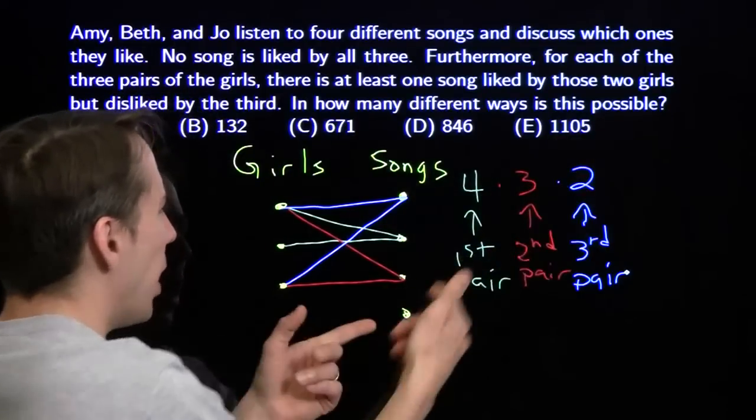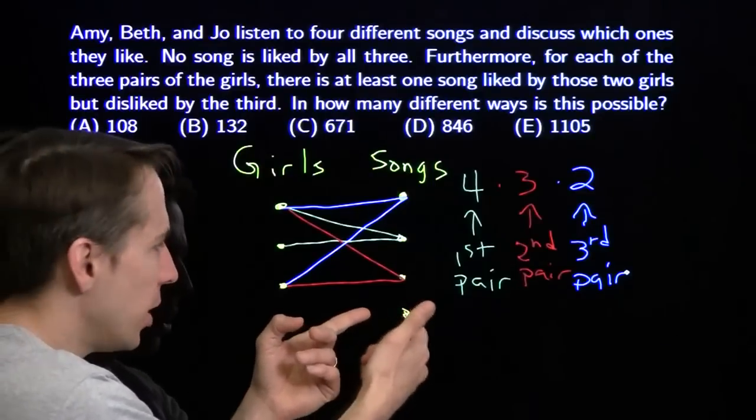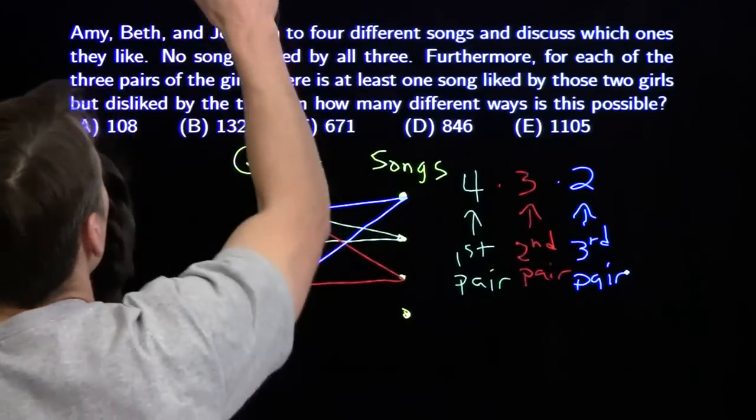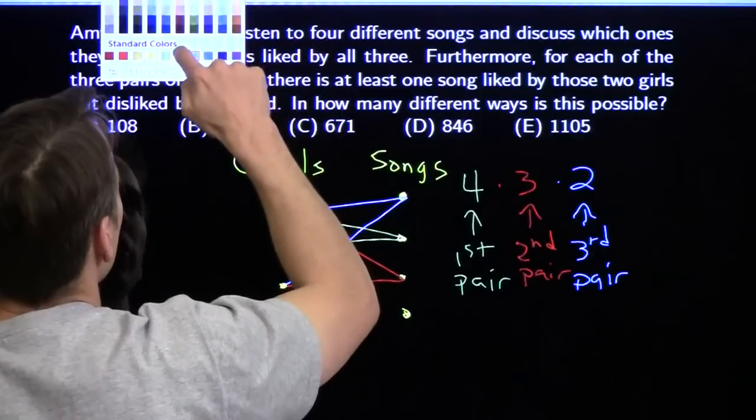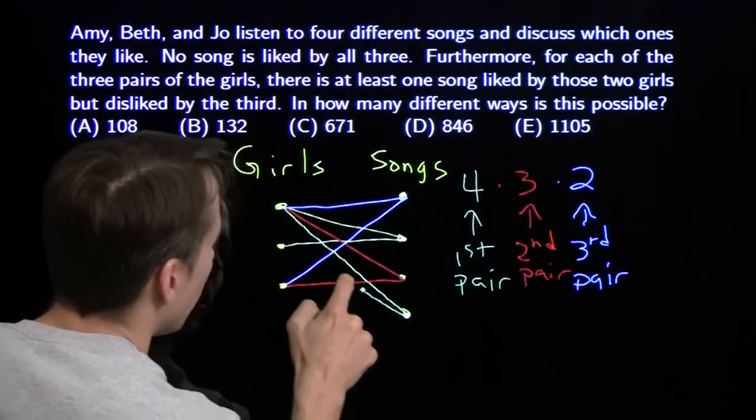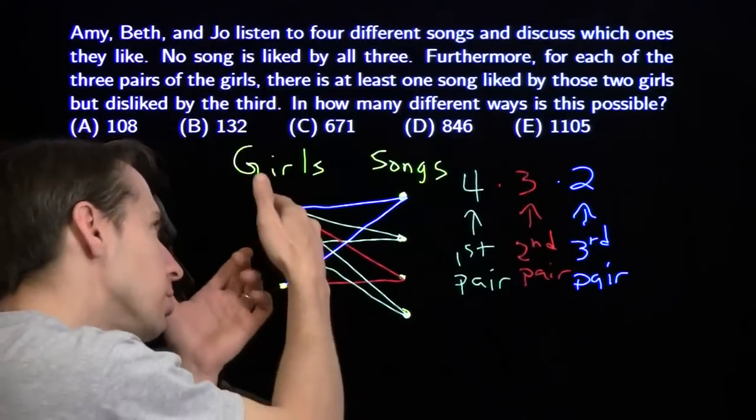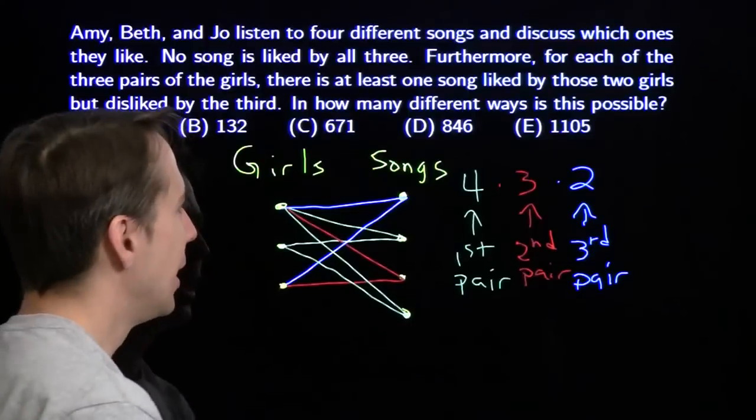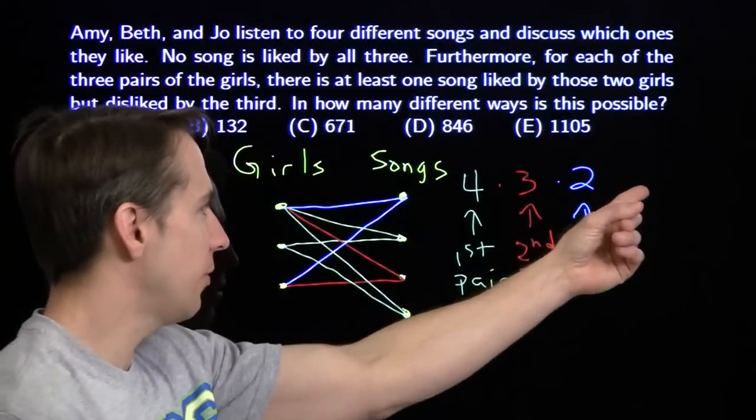What's going wrong? Why can't we just multiply by seven out here for the number of ways we can connect into that last point? Well, let's take a look at what happens if one of those options is these first two girls likes that last song as well, because these two girls can like two different songs. Now we see the problem with putting a seven out here.